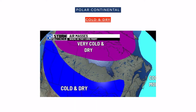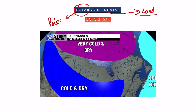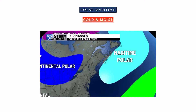The polar continental would mean very cold and over land — as polar means originated around the poles and continental means originated over land. Since it originated over land it will be dry, and because of the poles it will be cold. So polar continental air mass is cold and dry. Similarly, polar maritime air mass will be cold and moist, because maritime originated over water which has a lot of humidity.